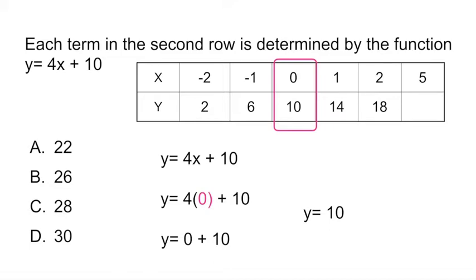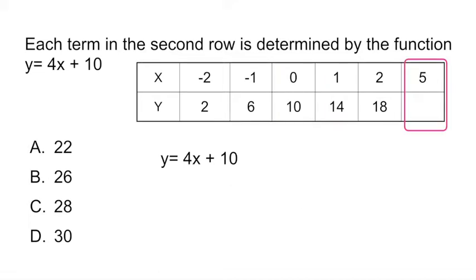Okay so what they're asking you is if they give you the value of x equals 5, what is the y value. So very easy, you just take that 5 and plug it into your equation. So instead of 4x you would have 4 times 5 plus 10, that gives you 20 plus 10. So y equals 30, which is answer D.